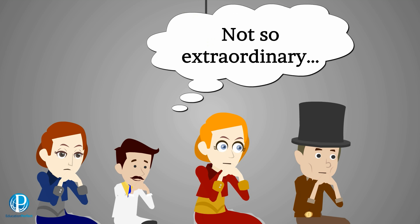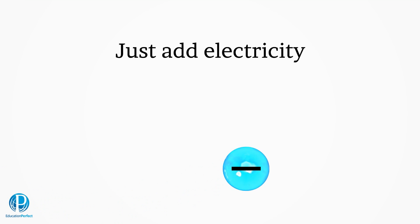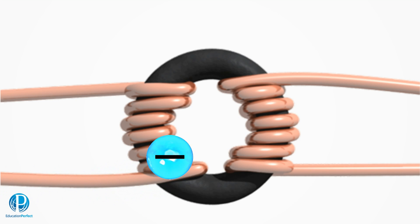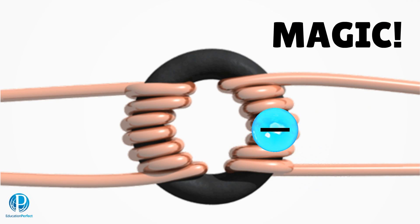But then he added the key ingredient, electricity. When one of the wire coils was connected to a battery, or a voltaic pile as they called it back then, an electric current flowed through it. But here's the funky part. There was also a current in the second coil.